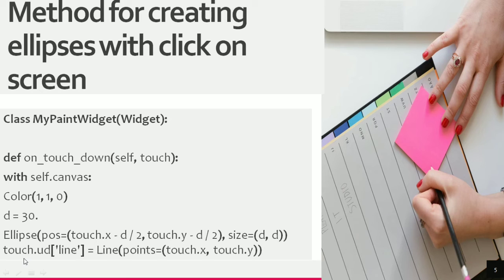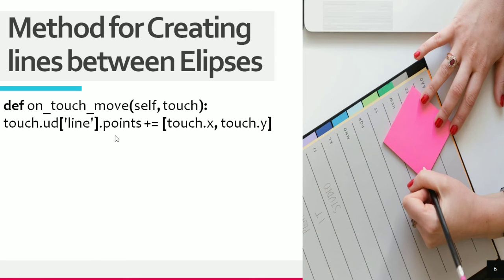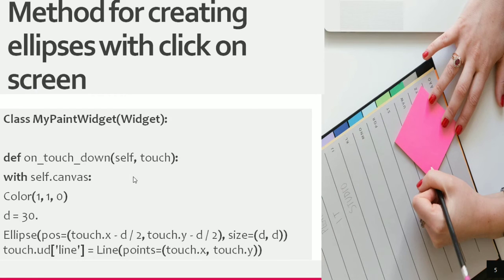We use touch.ud and inside the brackets we write line equals Line with points equals to touch.x comma touch.y. So we have defined the method for creating ellipses with a click on screen.